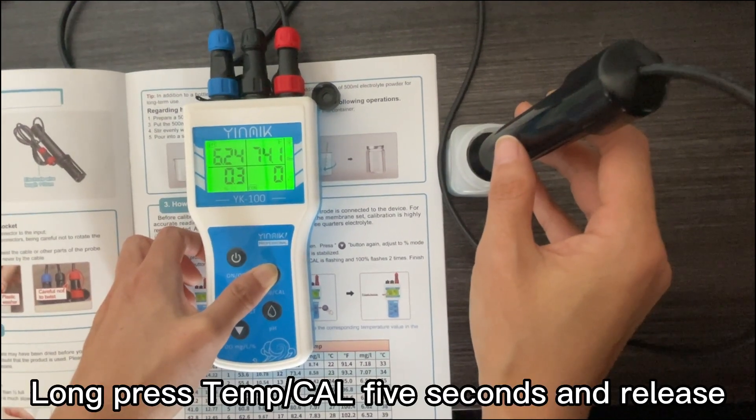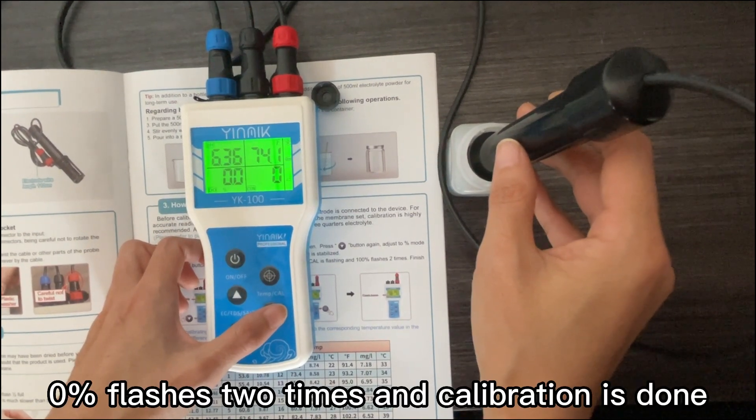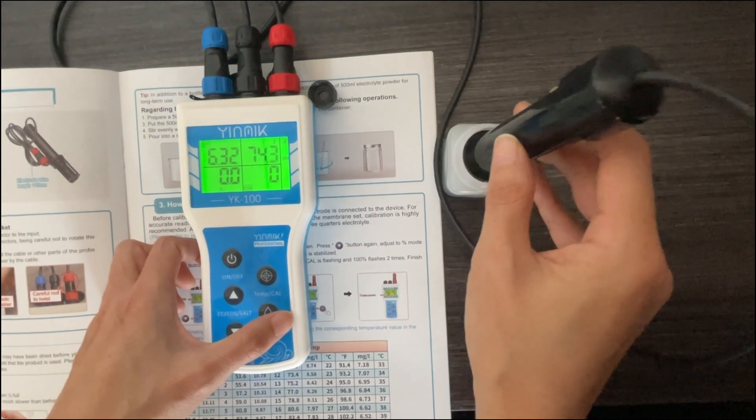Long press Temp/CAL five seconds and release. Cal is flashing. Zero flashes two times and calibration is done.